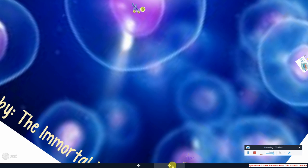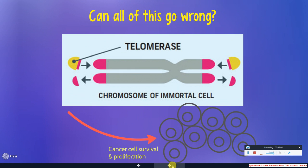In cancer, cells undergo an immortalization event, but there is an increase in the length of the telomeres due to high telomerase activity. This allows for continual division of the cells such that they do not enter senescence. Telomerase is not regulated, and instead the enzyme keeps adding more and more repeats to the telomere, immortalizing the cancer cells so they keep dividing without losing DNA and genes at the end of the chromosome.